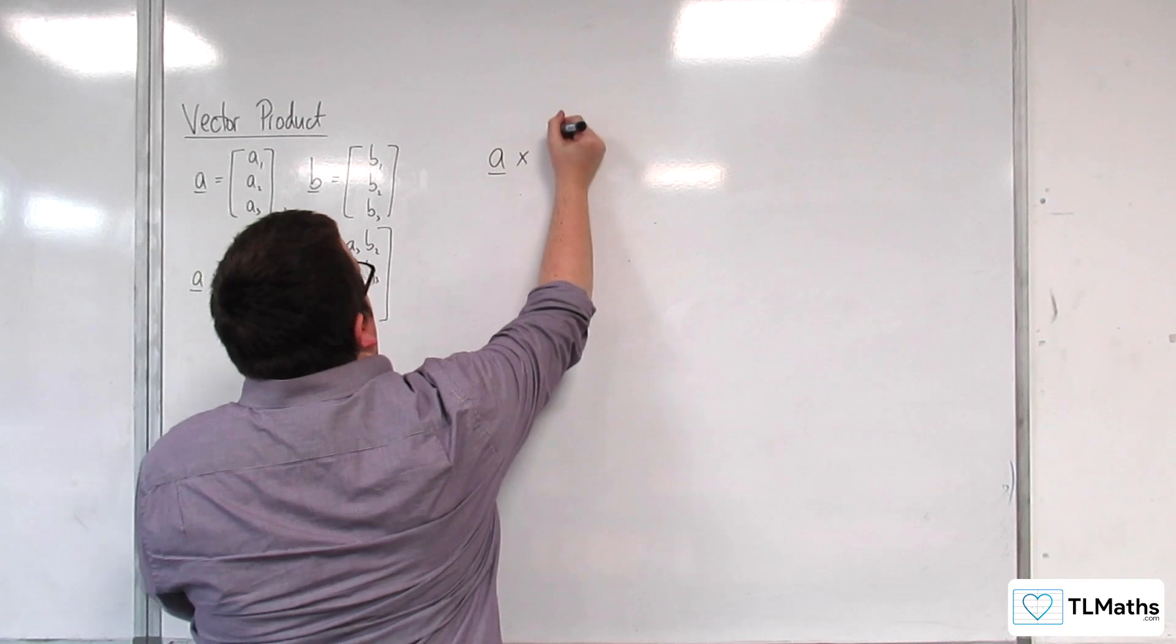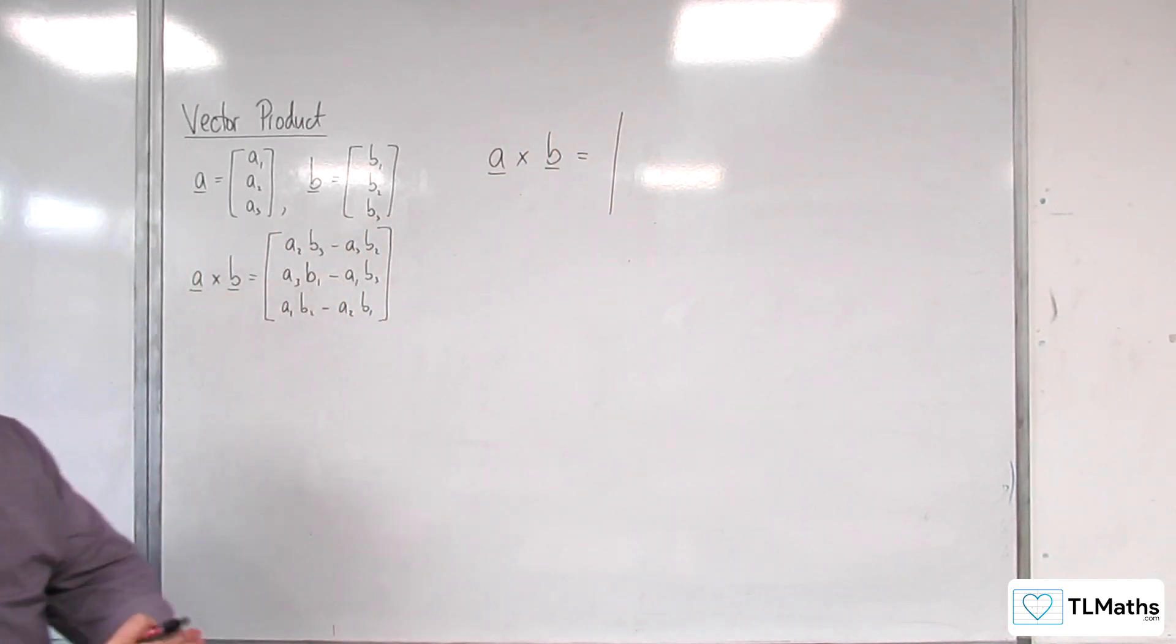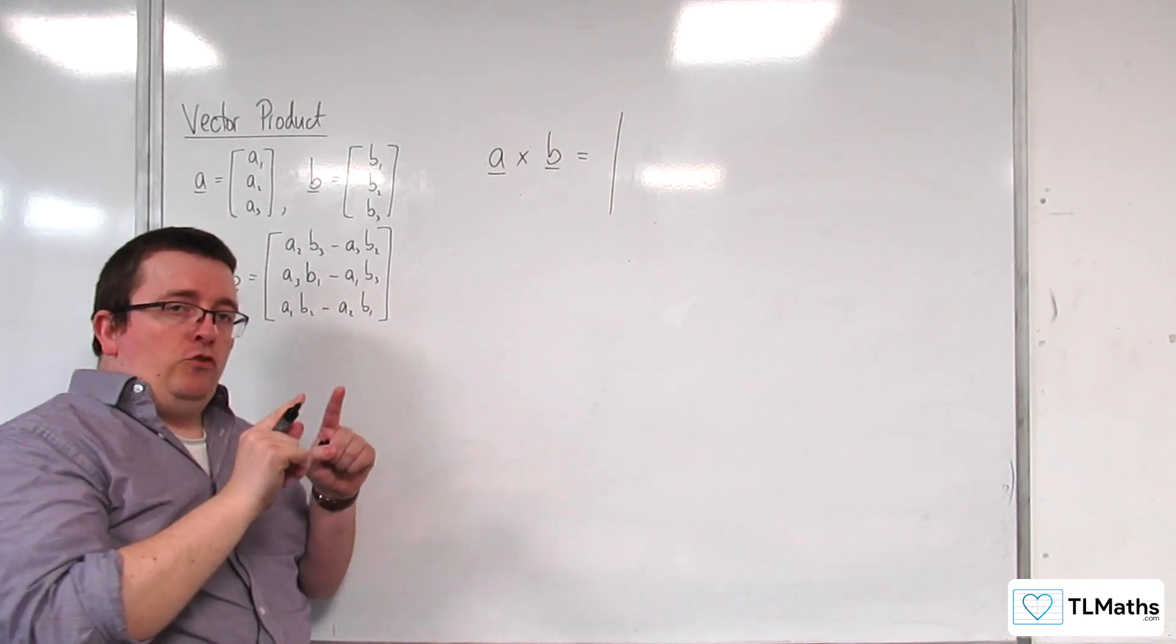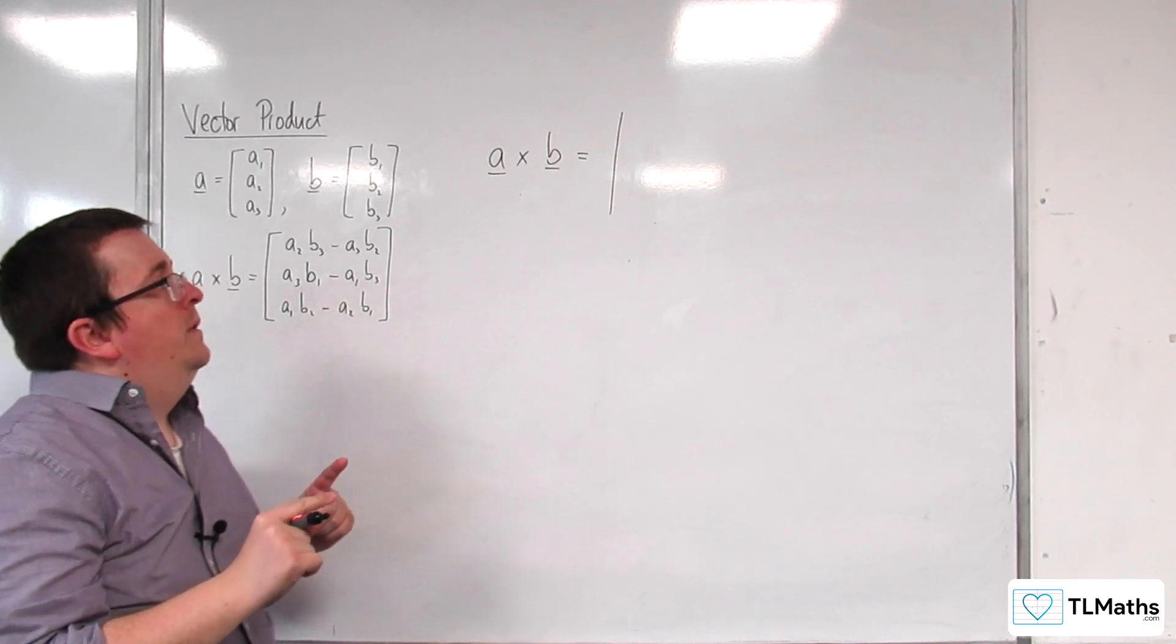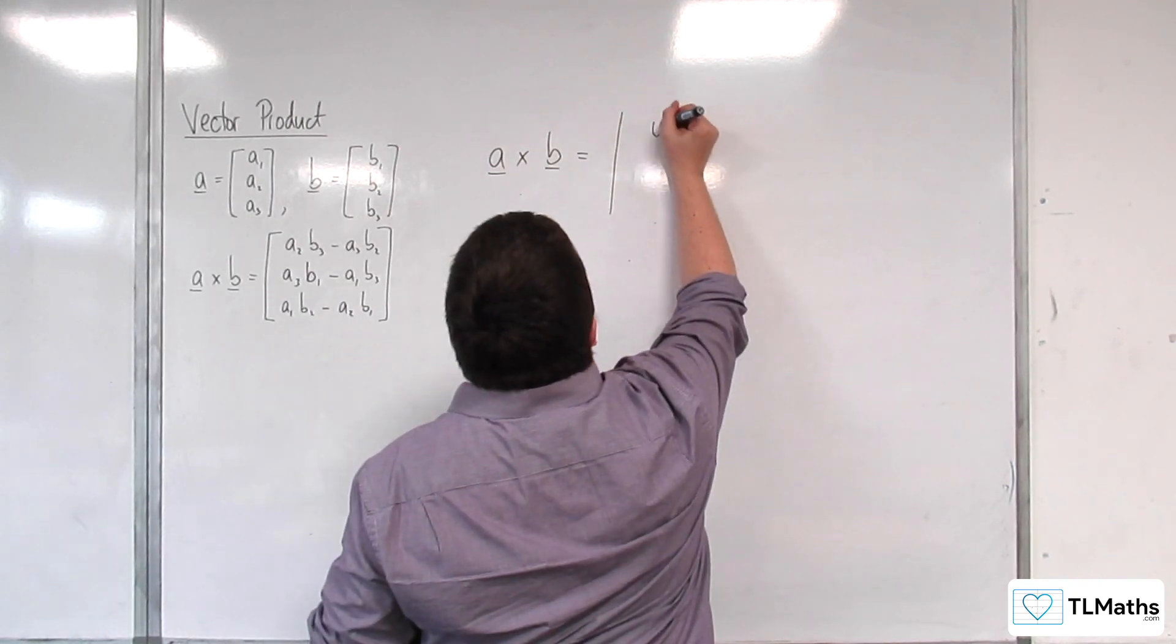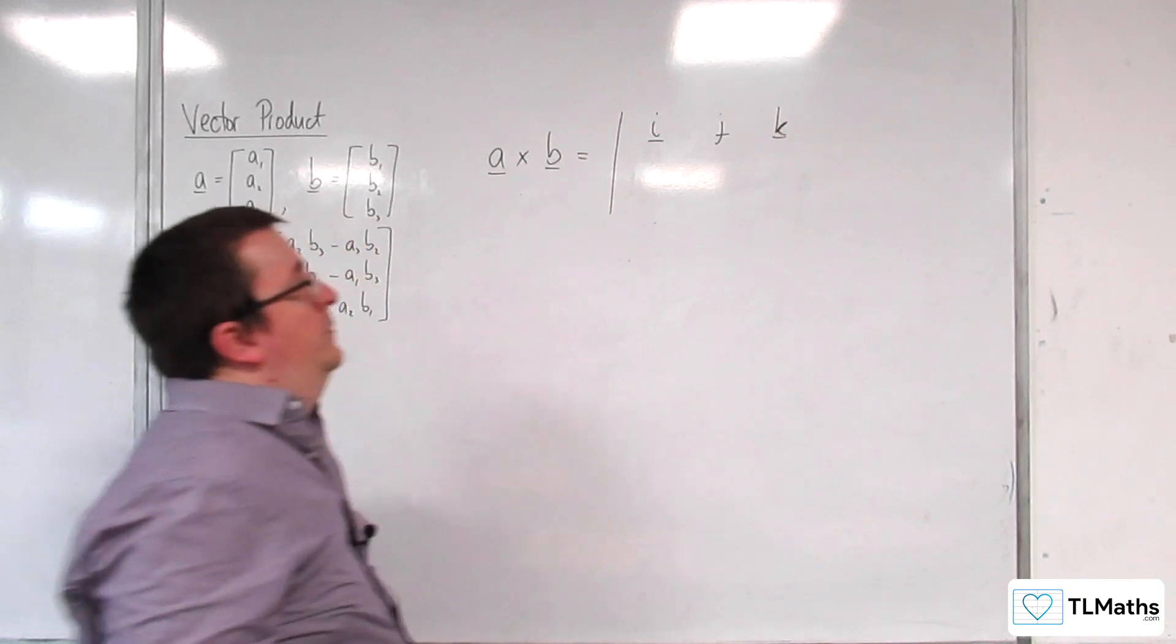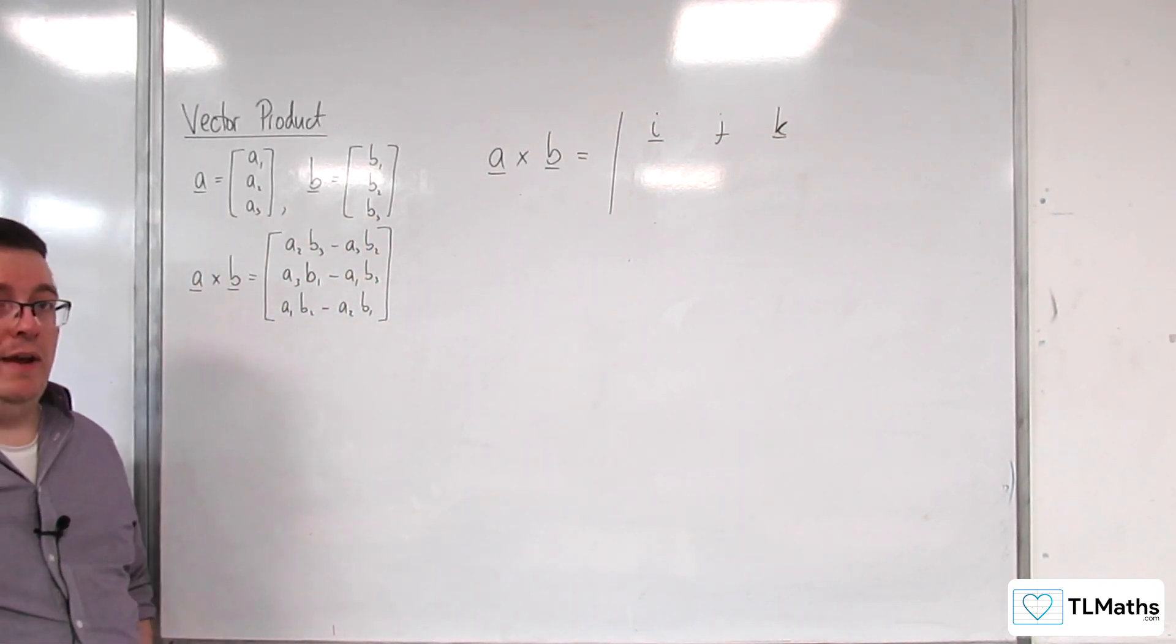So, A cross B is the determinant of, now, the matrix that we are going to have here will have a top row given by I, J, K. So, our three base vectors.